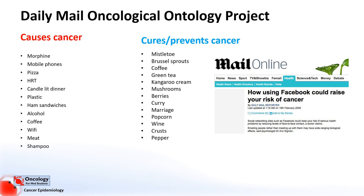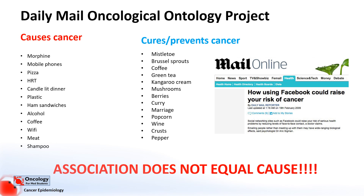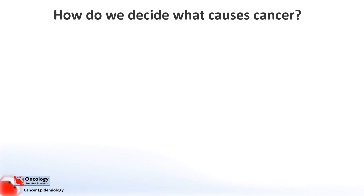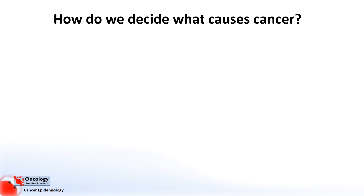So what makes the difference between a simple observation and scientific proof of cause? How are we, the poor confused public, supposed to work out what's true or not? Just because there's an association between two factors doesn't mean that one is causing the other. Epidemiology is the only means by which we can scientifically prove the effects of exposure to a risk factor, and whether it is causal and not just a coincidence.